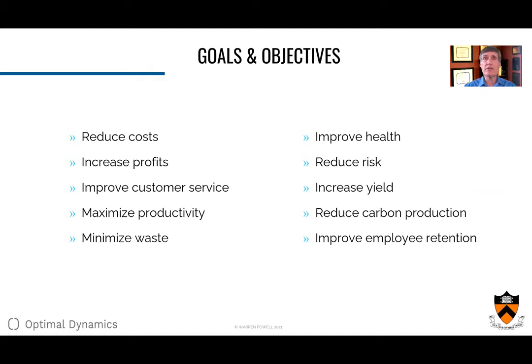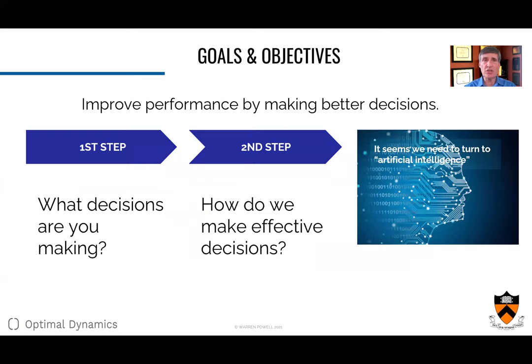Now, if I want to do better — if I want to achieve better goals — I have to make better decisions. One of the odd things in more complex problems is that you have to think about what decisions you're making. Sometimes these are obvious — in finance, we're buying and selling assets — but if you want to improve health, or respond to the COVID epidemic, or make your supply chain more productive, you have to figure out what decisions you're making. Then the second step is how do you make effective decisions? Somewhere in that conversation, somebody is going to say it seems like we need to turn to artificial intelligence.